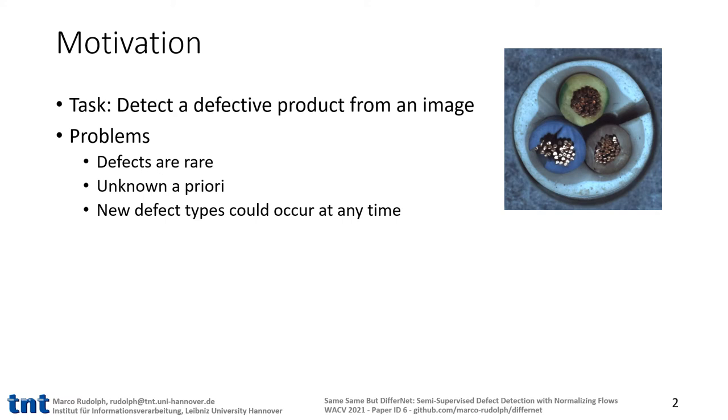Here we go, what do we do and why? We want to detect if a product is defective from an image, which is important to ensure product quality and safety standards. For example, here at the upper right, we see a defect in form of a cut isolation of a cable.